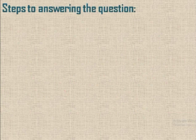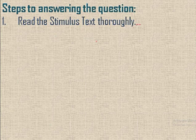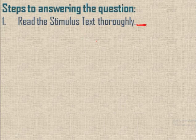How to answer critical reasoning questions: first of all, read the stimulus text. Don't read the answer choices first because it can affect the way you read the text, and then you might miss the argument behind the text. So don't read the questions first — read the stimulus text first.